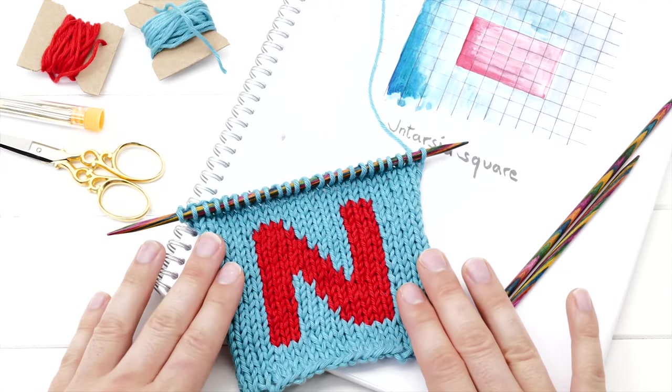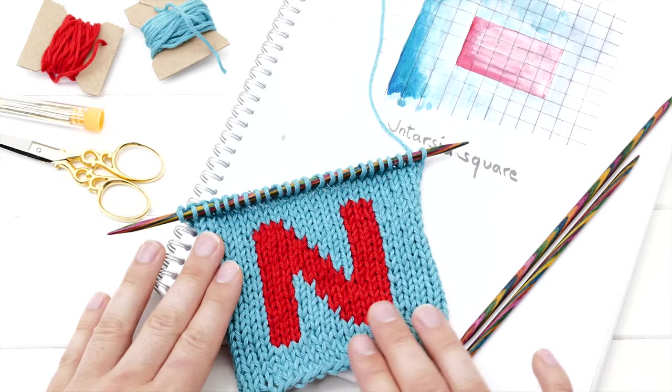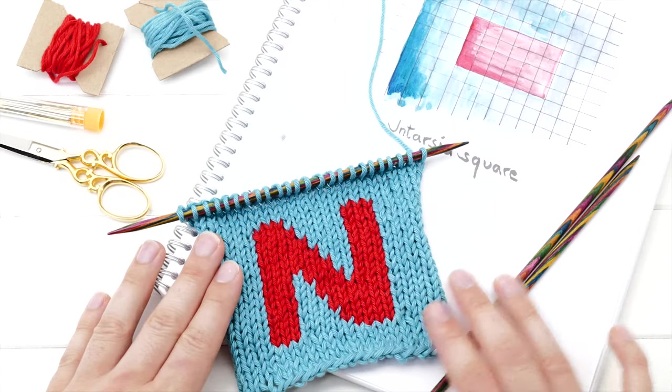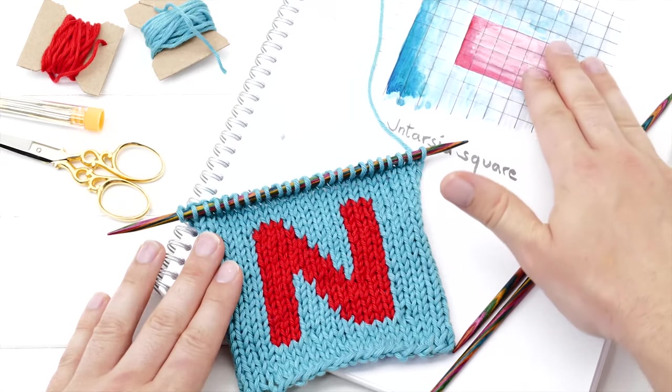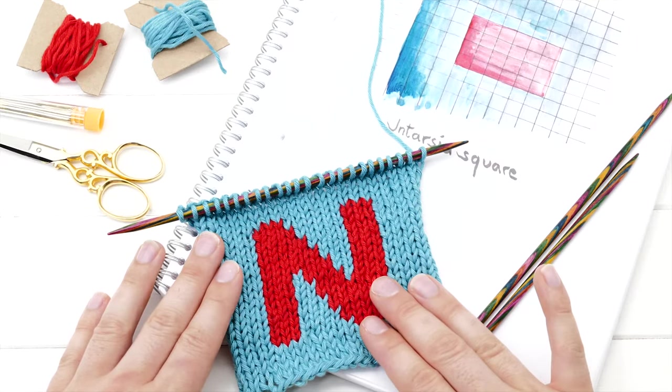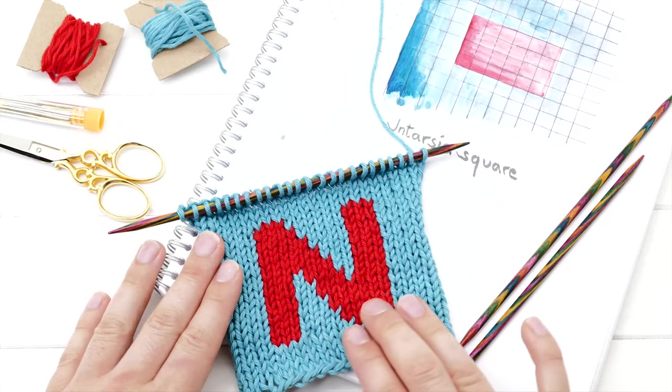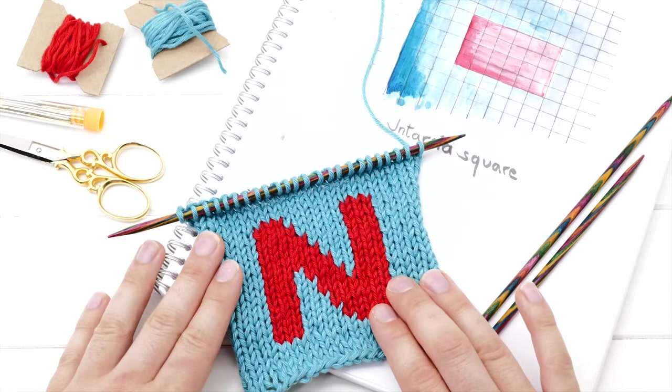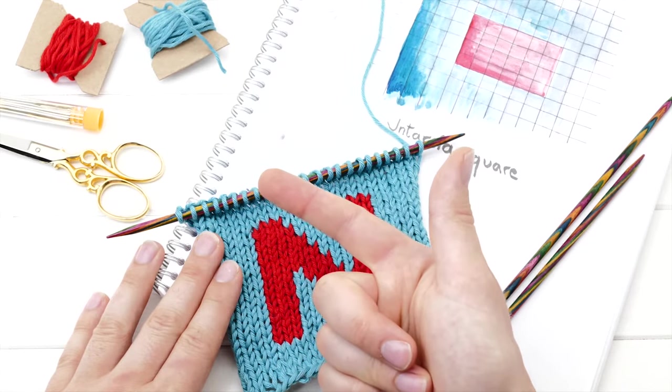Intarsia is a colorwork technique that enables you to create different color blocks or panels in your project. This allows you to transfer complex designs and even pictures into knitting. As most of it is knitting stockinette stitch, it's actually not very hard to learn. It just requires a bit of patience and some careful planning.